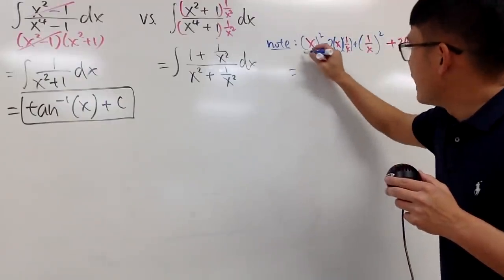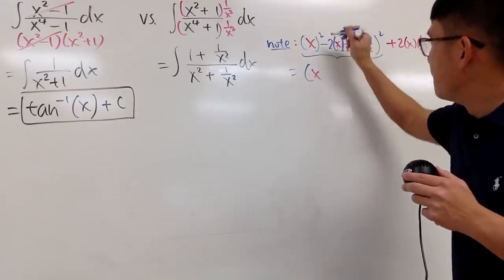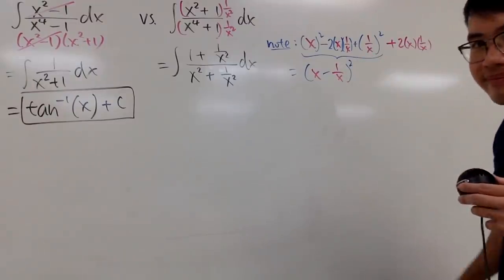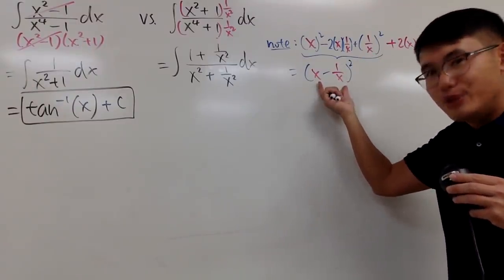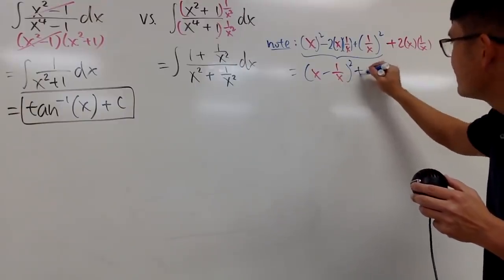Well, you see these three terms we can end up with (x - 1/x)², and this will be my u in a second. This right here is just the number 2.